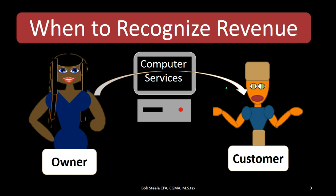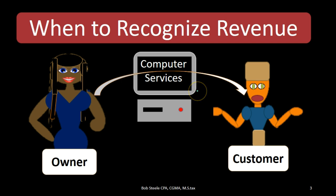For example, let's say we are the owner and we're going to do computer work for the customer. At the point in time that we do the computer service, that is when we have earned the revenue. It doesn't matter when the cash is received — that's when we have earned it.